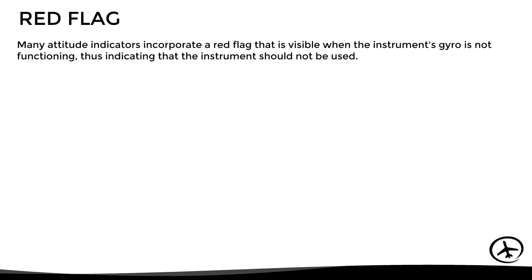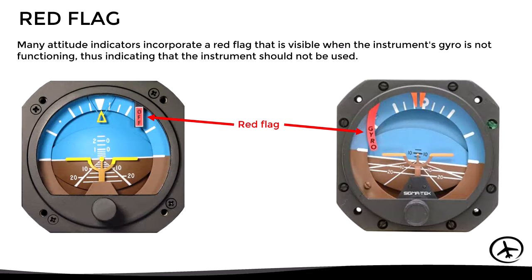Another component found on some instruments is a red flag, which becomes visible when the instrument's gyroscope is not working properly, indicating that the instrument should not be used.